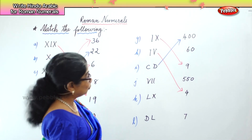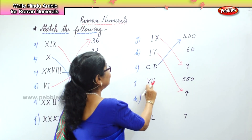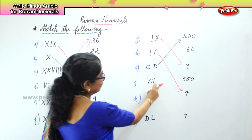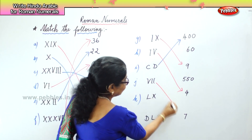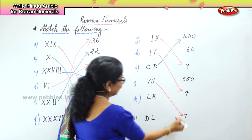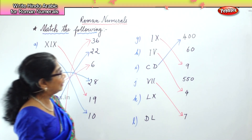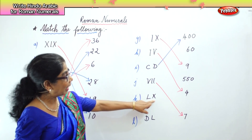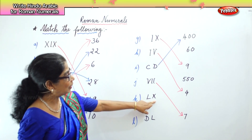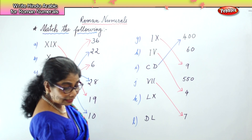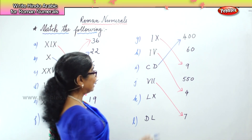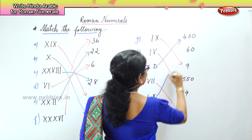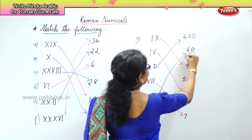Next you have 5, 6, 7. Where is 7? Over here, you have 7. Next we have 50 and 10. What is 50 and 10? That is 60. 50 and 10 is 60.